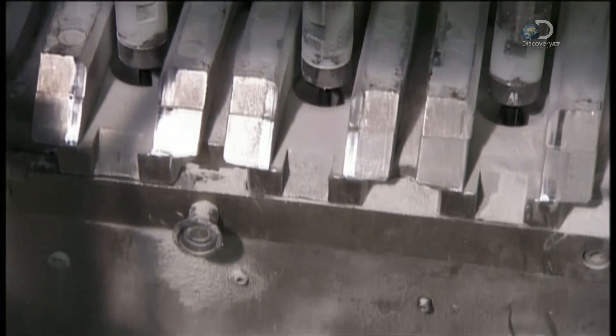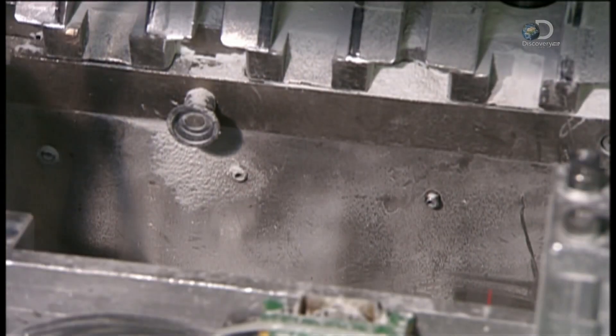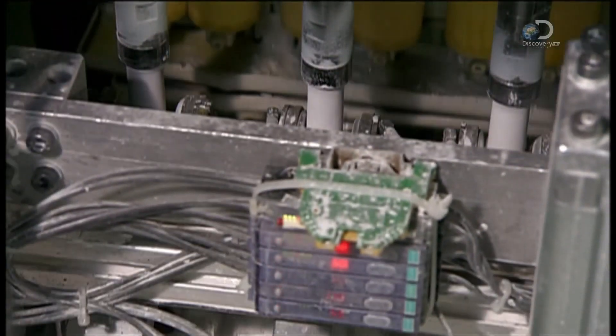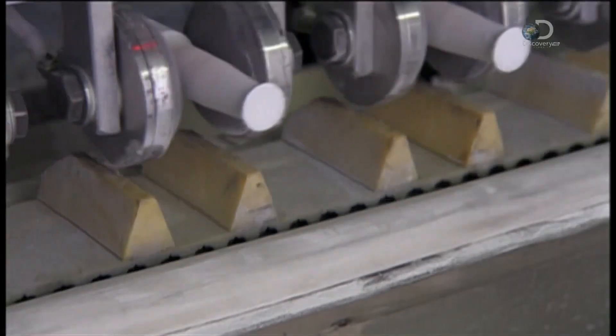The powder funnels into a mold. It closes to press the powder into the shape of spark plug insulators, and a binding ingredient in the mix helps them keep their shape.